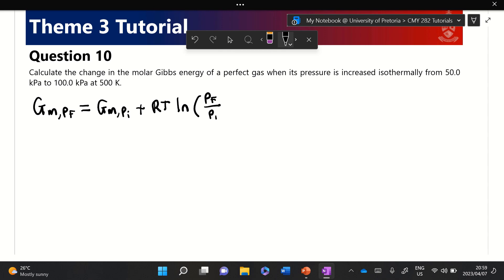Straightforward application of that one. So of course, if we take this over to that side, then we get that Gm,Pf minus Gm,Pi, which is of course ΔGm, and then that would be equal to RT ln of Pf over Pi.